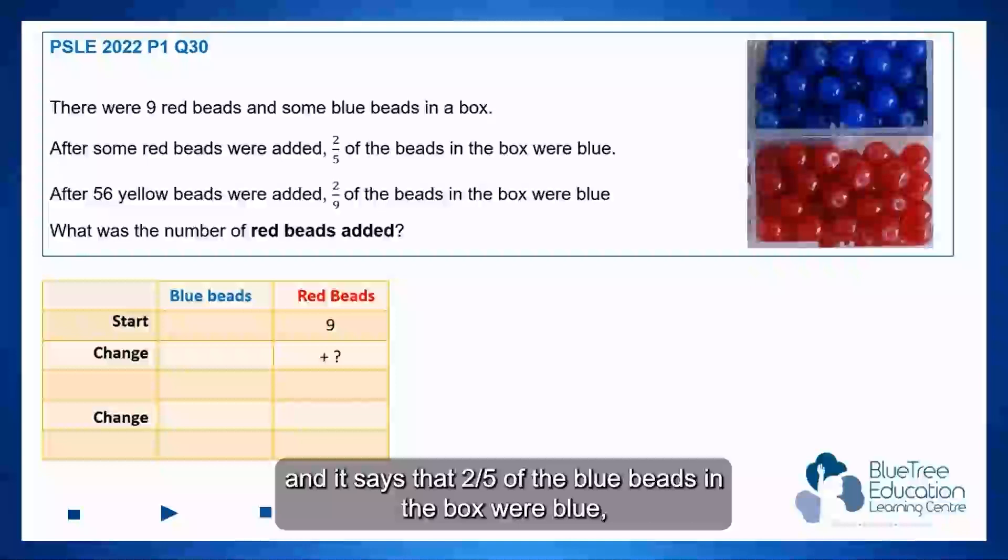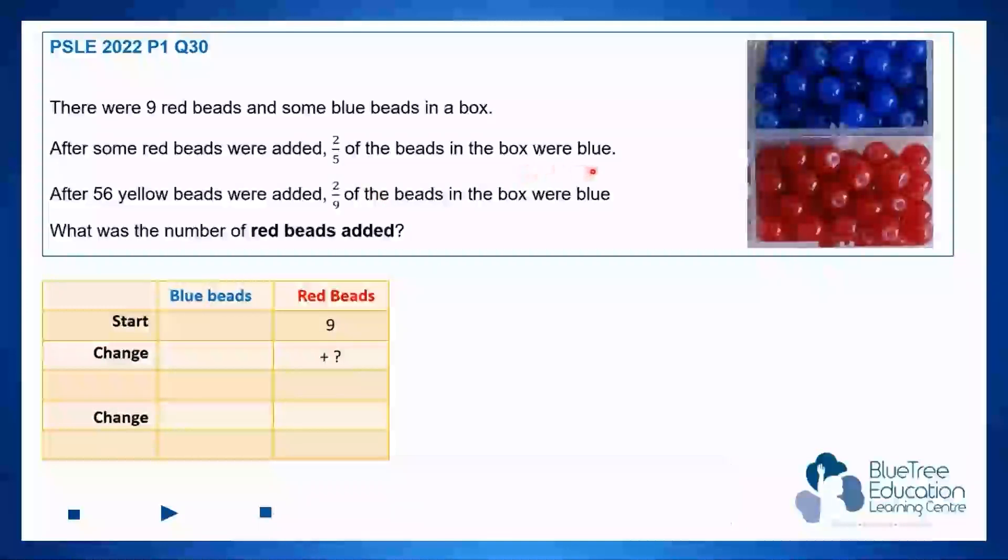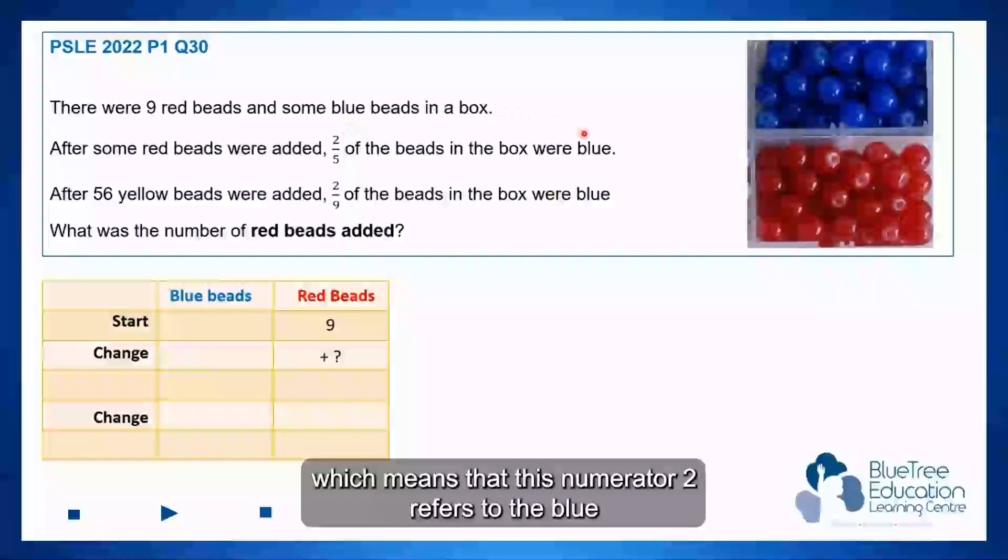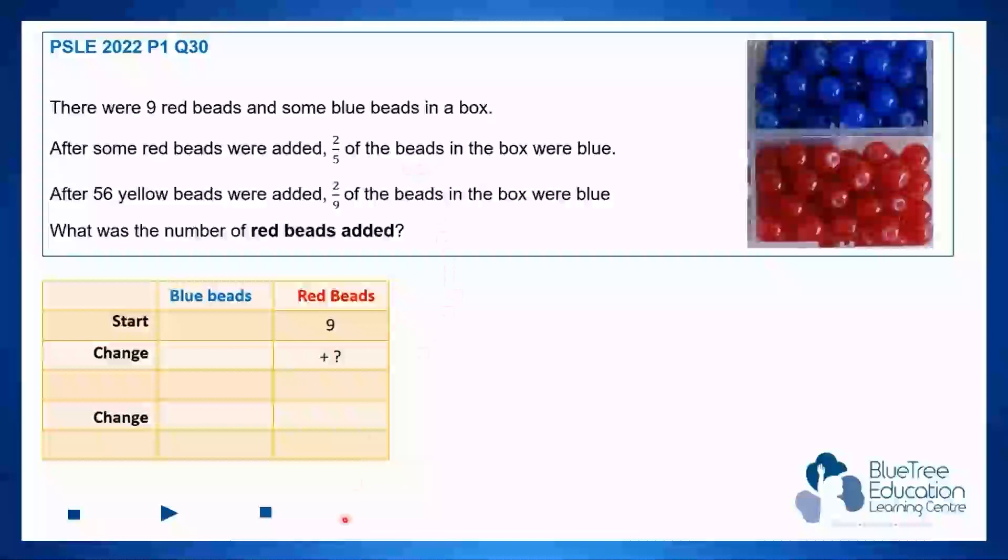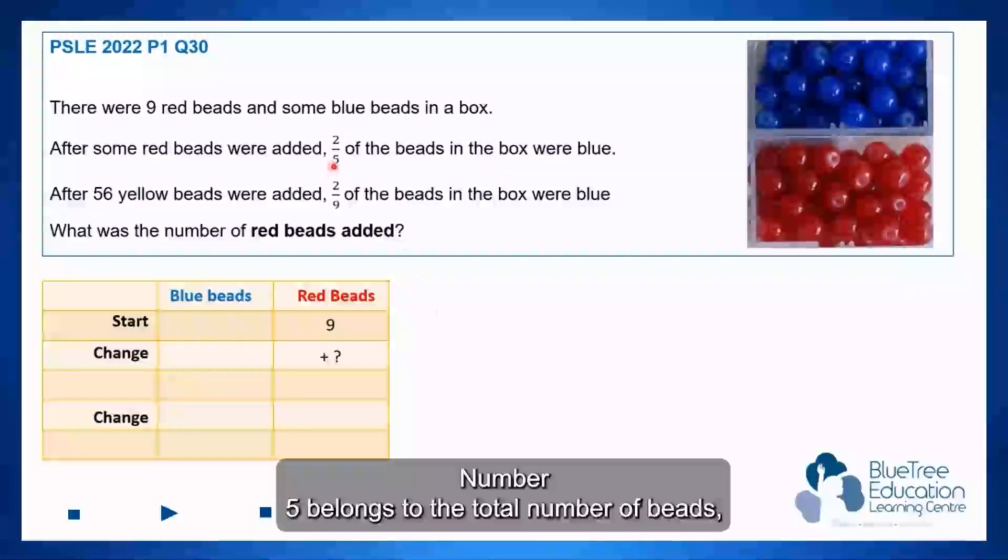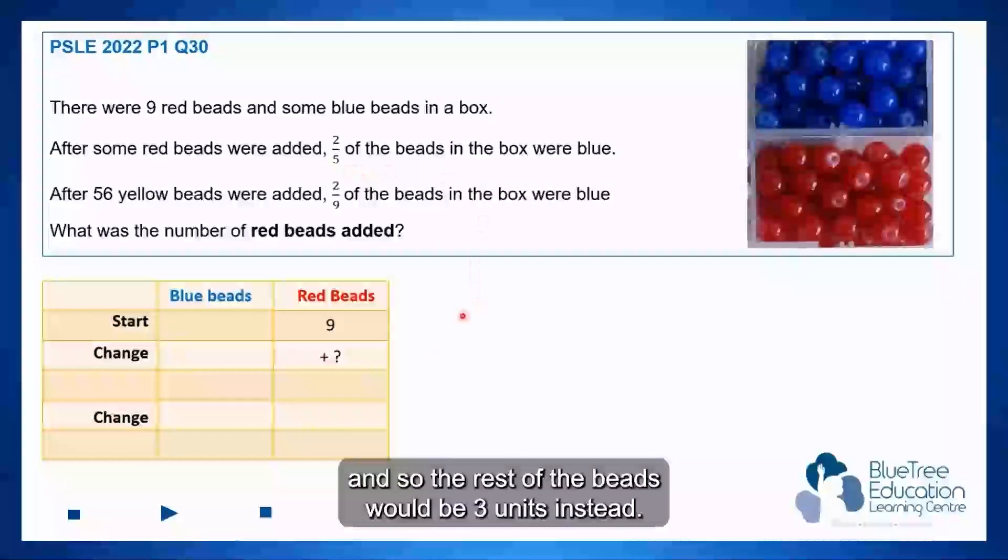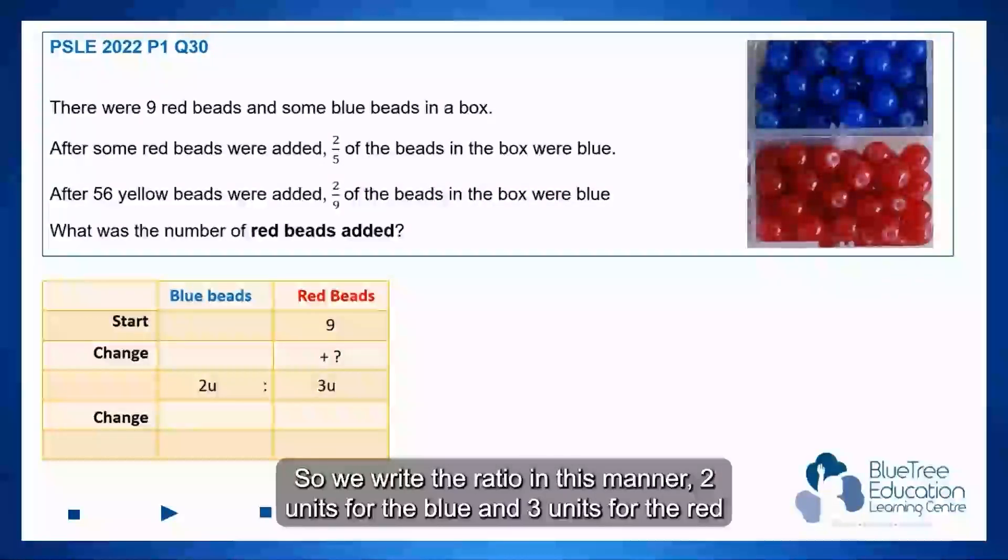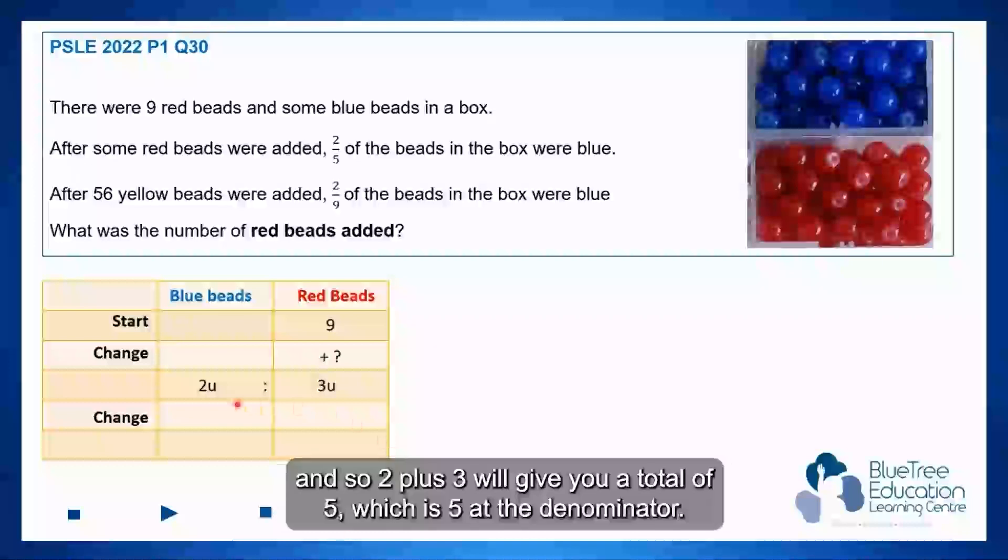And it says that two-fifths of the beads in the box were blue, which means that this numerator two refers to the blue while the five belongs to the total. So the rest of the beads would be three units. We write the ratio in this manner: two units for the blue and three units for the red, and so two plus three will give you a total of five which is found at the denominator.